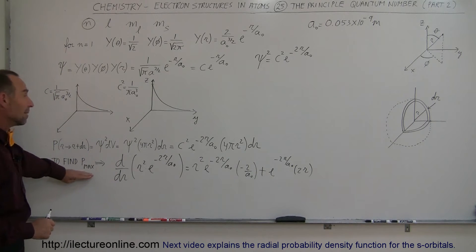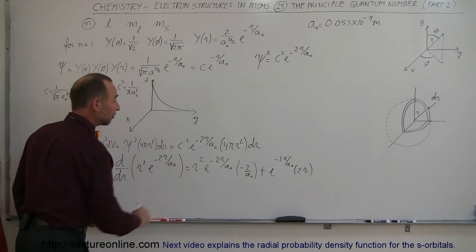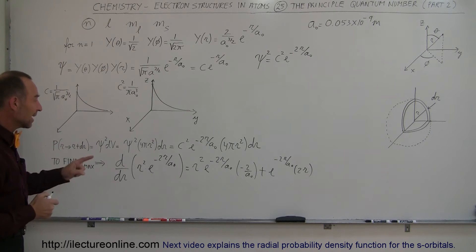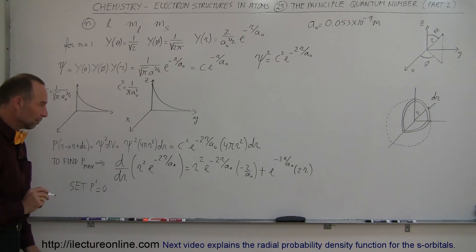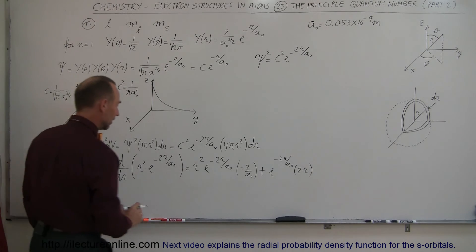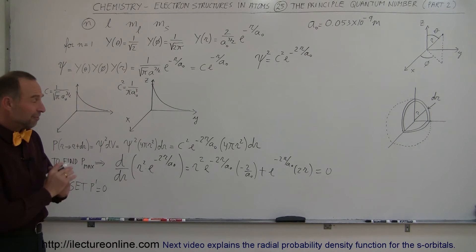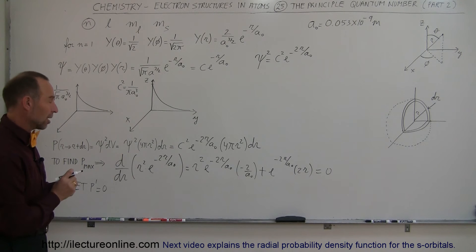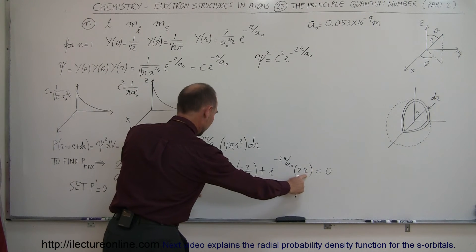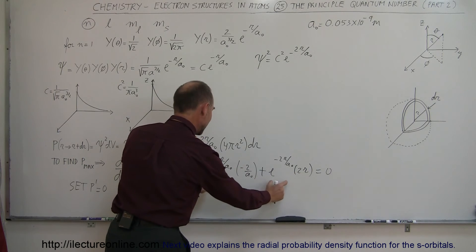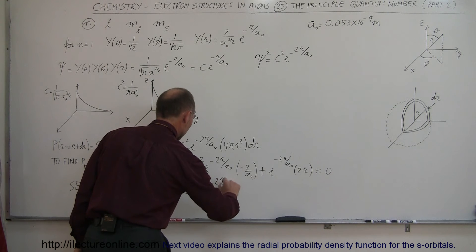So what we've done is taken the probability of finding the electron in that little thin shell, taken the derivative of that, and to find the maximum probability, we set that equal to zero. We set P prime equal to zero — that's the old mathematics trick to find the maximum value of something. Now, to solve for r, we factor out what's common. We have 2r and e to the minus 2r over a sub-naught common to both terms, giving us 2r times e to the minus 2r over a sub-naught.